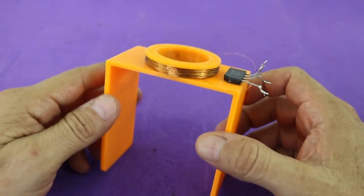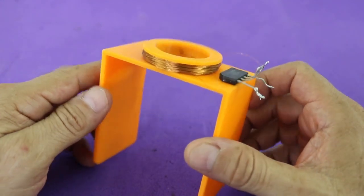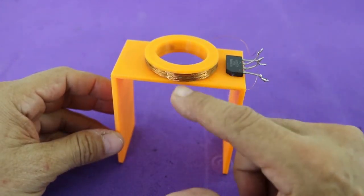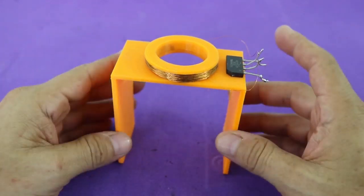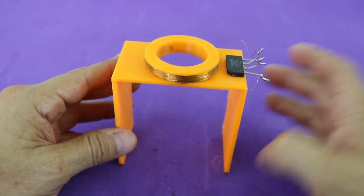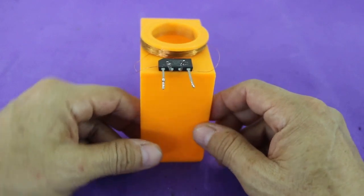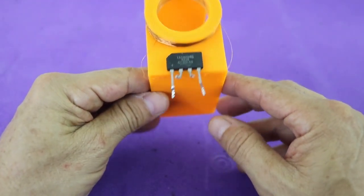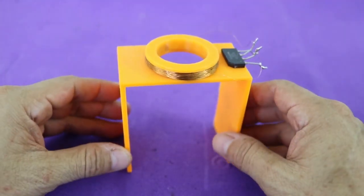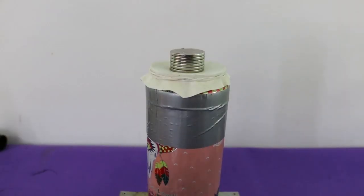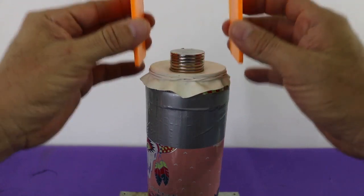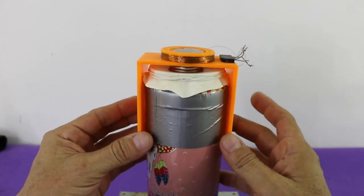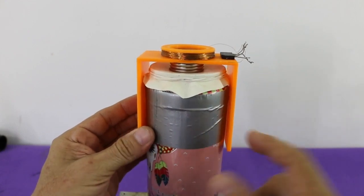And since the oscillatory movement of the magnet induces AC on the coil, I am using this bridge rectifier to convert the AC into DC. The plastic part with the coil simply goes here and I will fix it with tape.